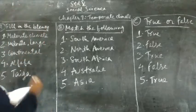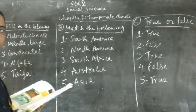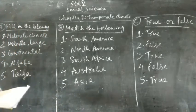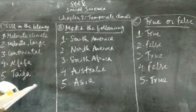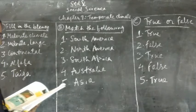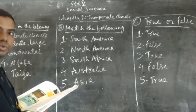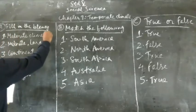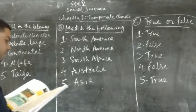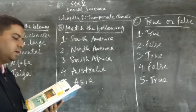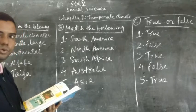First we come to A: fill in the blanks. Question 1: Dash is the most prominent feature of the temperate zone. So the answer is moderate climate. Moderate climate is the most prominent feature of the temperate zone.